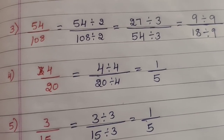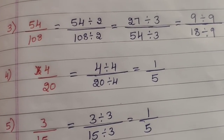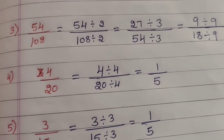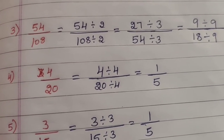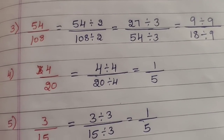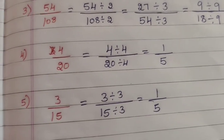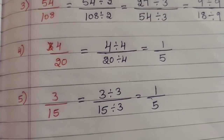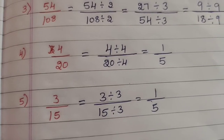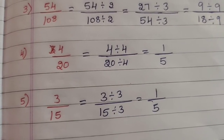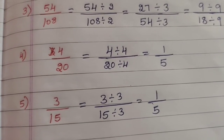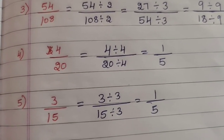Question 4 — 4/20: divide by 4: (4÷4)/(20÷4) — 4 ones are 4, 4 fives are 20 — giving 1/5. Question 5 — 3/15: divide by 3: (3÷3)/(15÷3) — 3 ones are 3, 3 fives are 15 — giving 1/5.